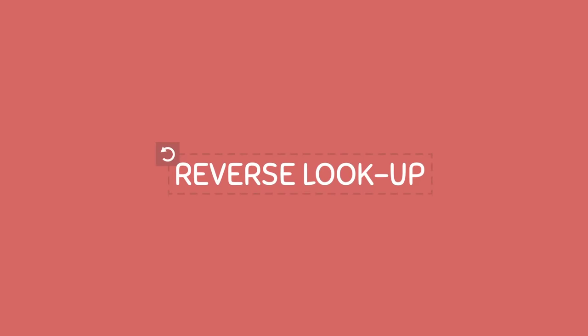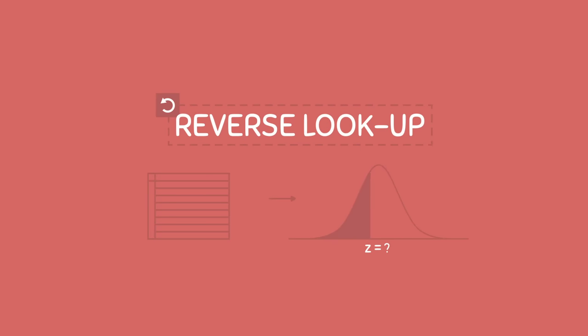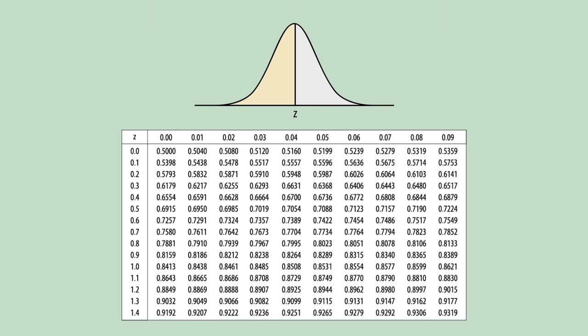You can also use the z-score table to do a reverse lookup, which means you can use the table to see what z-score is associated with a specific area. So if I wanted to know what value of z corresponds to an area of 0.8461 to the left of it, all we have to do is find 0.8461 on the table and see what value of z it corresponds to. We see that it corresponds to a z-value of 1.02.